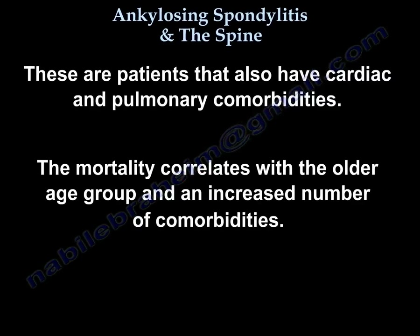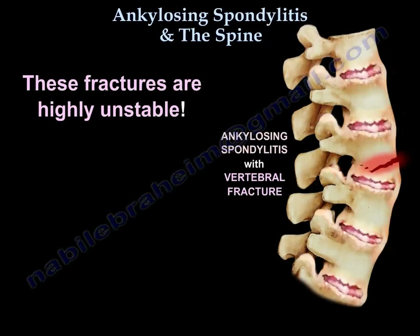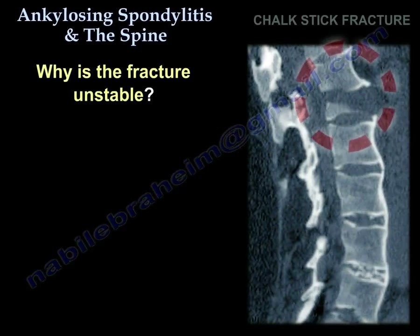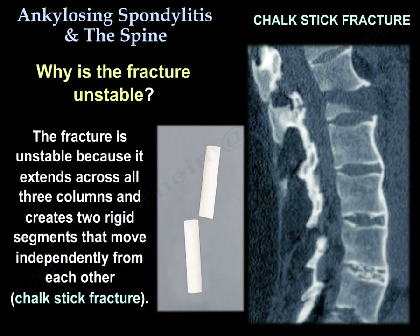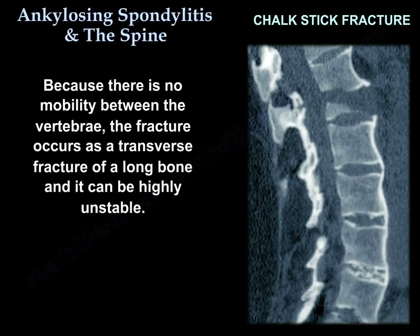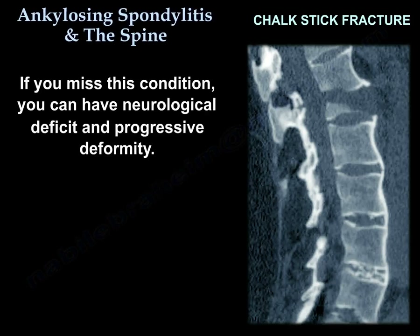These patients also have cardiac and pulmonary comorbidities. The mortality correlates with older age and an increased number of comorbidities. These fractures are highly unstable because they extend across all three columns, creating two rigid segments that move independently from each other — this is called a chalk-stick fracture because there is no mobility between the vertebrae. The fracture occurs as a transverse fracture of a long bone and can be highly unstable. If you miss this condition, the patient can develop neurological deficit and progressive deformity.